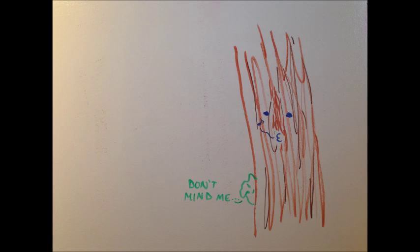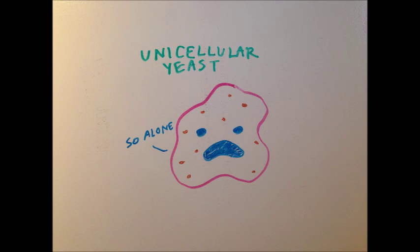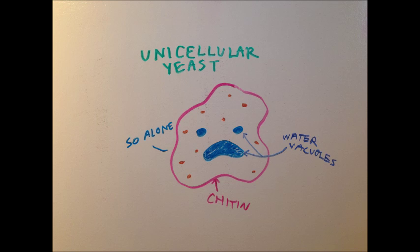In some parasitic or mutualistic fungi, the hyphae are specialized so that they can dig into the tissue of their host. These specialized hyphae are called haustoria. Unicellular fungi are somewhat reminiscent of plant cells, but with cell walls made of chitin as opposed to cellulose. They have large vacuoles for water storage in the center of the cell, as well as granules for food storage.